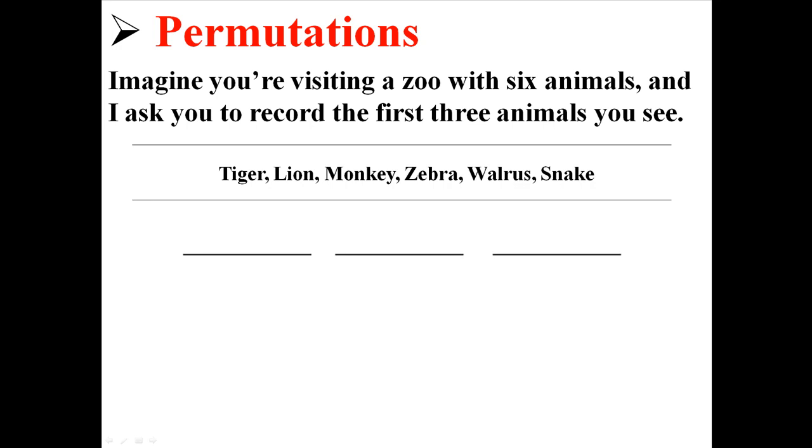So let me just remove those numbers so they don't get confusing. Now in the first spot there are six different things you could see. But in the second spot you've already seen one animal, so there are only five different things that can go into that spot. And for the third spot you've already seen two animals, so there's only four different things that can go into that spot.